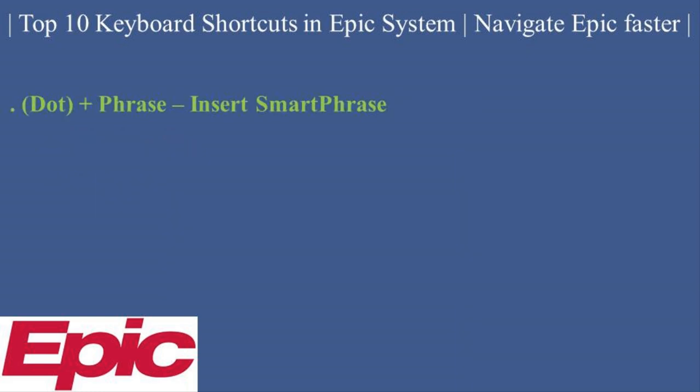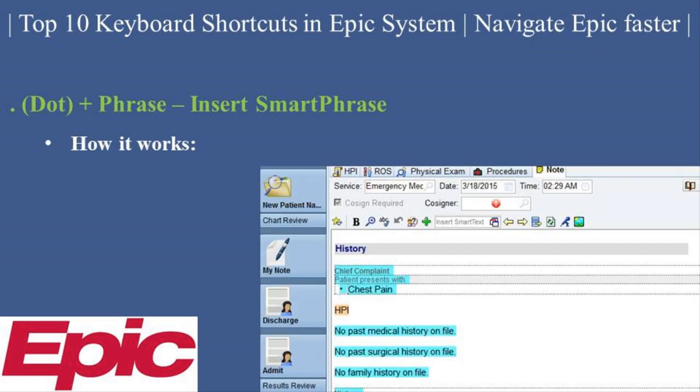Dot plus Phrase — Insert Smart Phrase. Let's talk about one of the most powerful shortcuts: dot plus phrase. How it works: type a dot followed by your smart phrase shortcut to insert pre-built text. Example: typing .HPI could insert a complete history of present illness template into your note. Pro tip: customize your smart phrases to include repetitive phrases specific to your workflow.